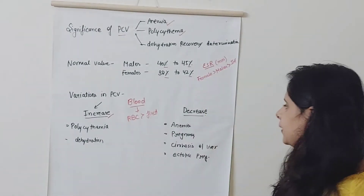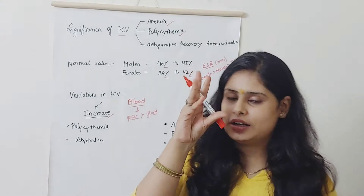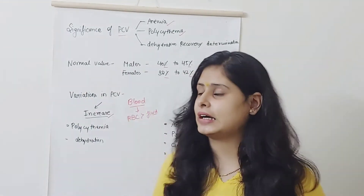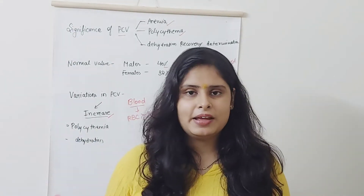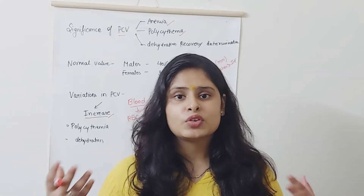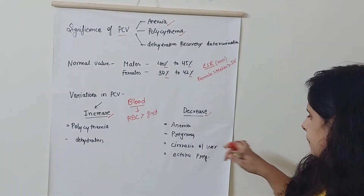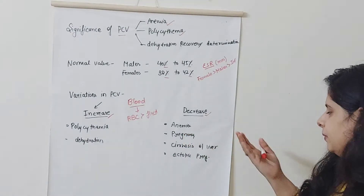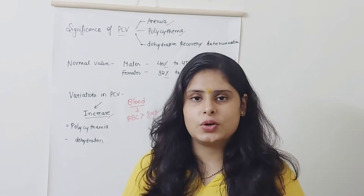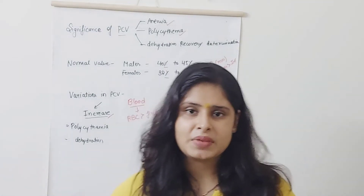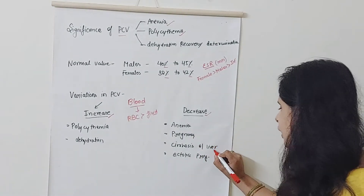If PCV decreases, that means the patient has anemia — RBCs are less and fluid is more inside the body. In pregnancy, anemia is also common because the body has a higher amount of fluid during pregnancy. Cirrhosis of the liver also causes decreased PCV, because many things are secreted by the liver, such as ferritin, and iron has a strong relationship with the liver.